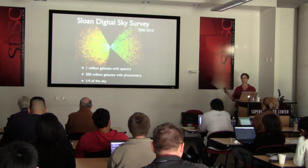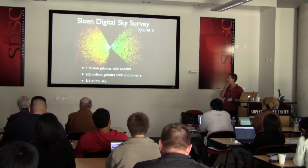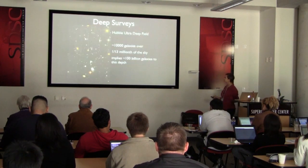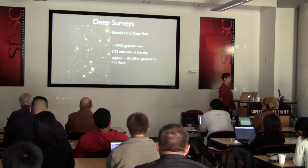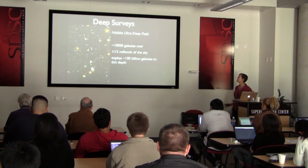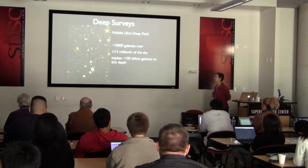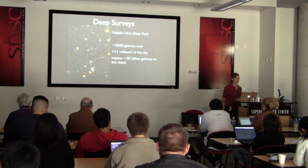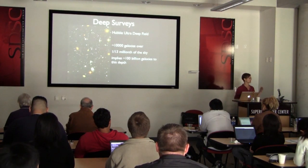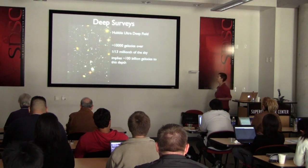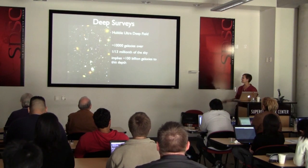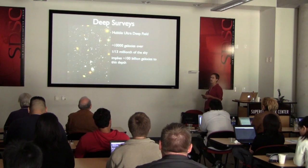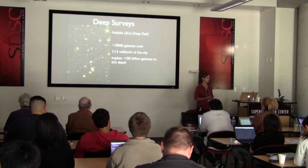One of the amazing things about astronomy today is that we're still almost scratching the surface of what Sloan can tell us about galaxy evolution and cosmology. On the other end, we have very deep surveys of the universe, primarily from HST and in the future from JWST, Euclid, and other deep surveys. The Hubble Ultra Deep Field contains about 10,000 galaxies in an empty patch of sky — one inch of a millionth of the sky — implying of order a hundred billion galaxies to this depth.